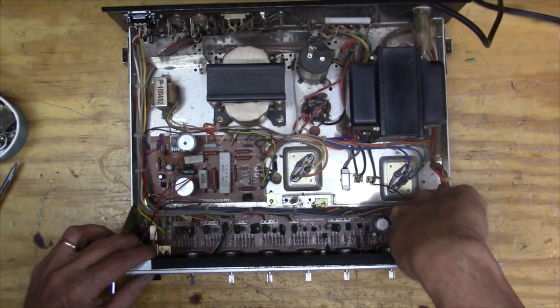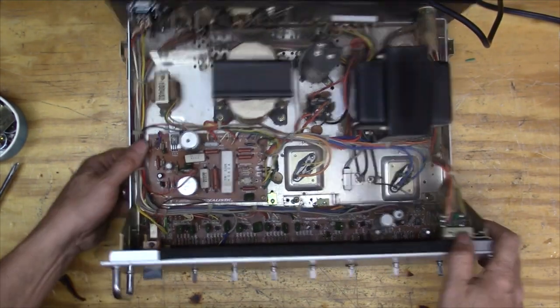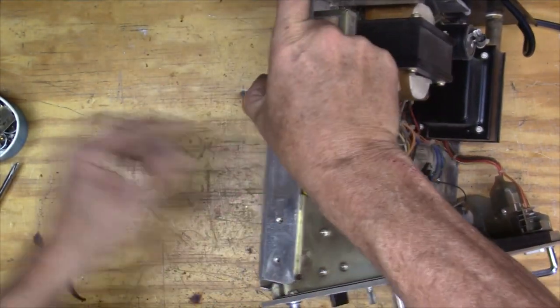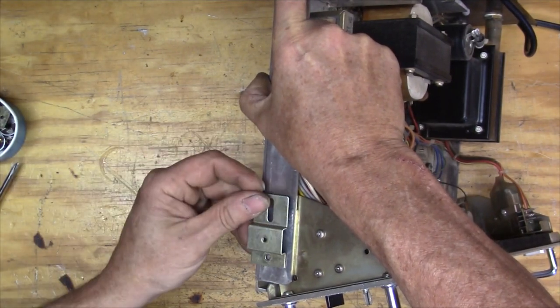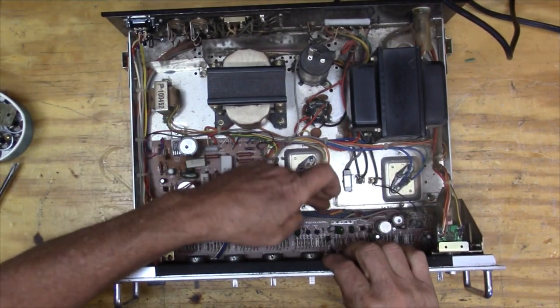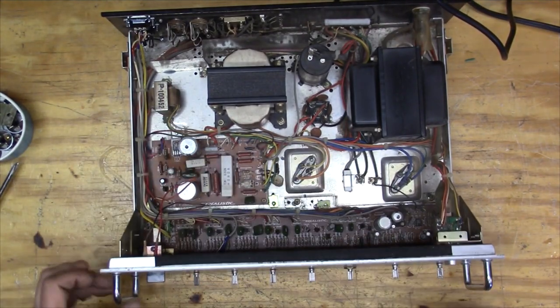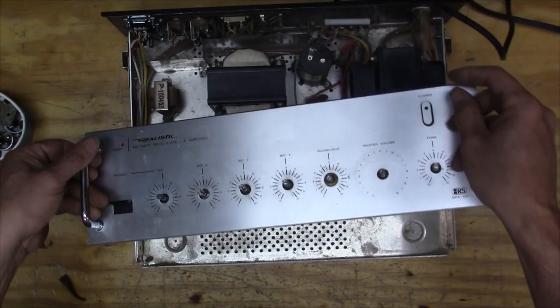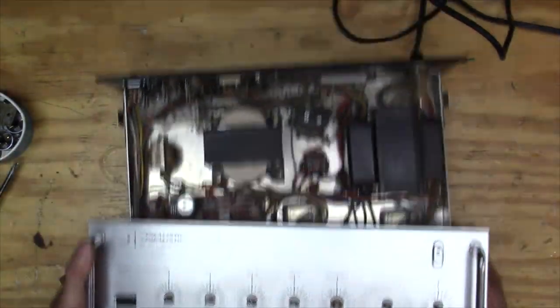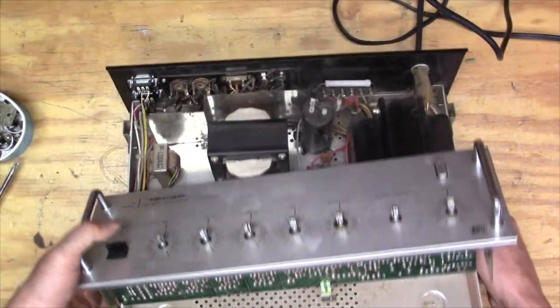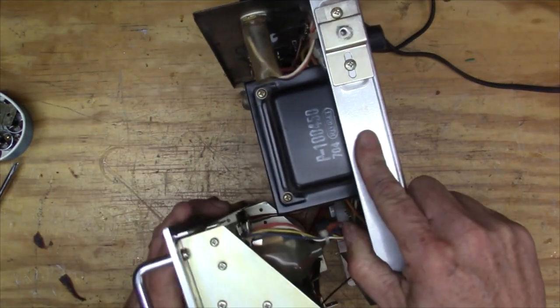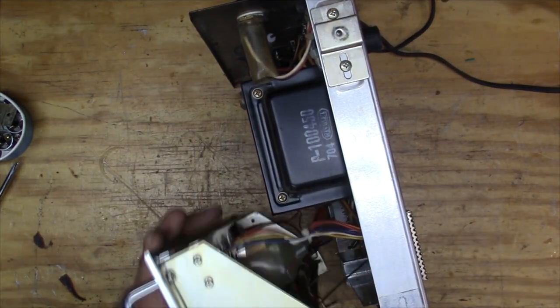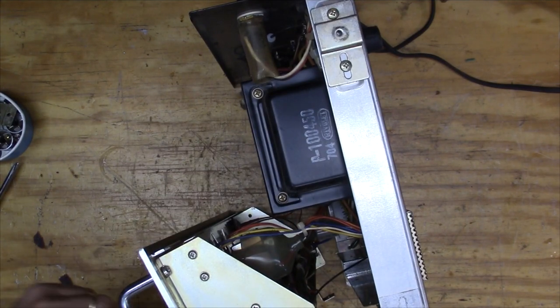So I was going to update these capacitors in here, and so I pulled out these screws here which held in this guy like that, and then this screw from underneath, and then voila it just comes right out which is quite nice. I can set it on its side and replace those capacitors pretty easily.